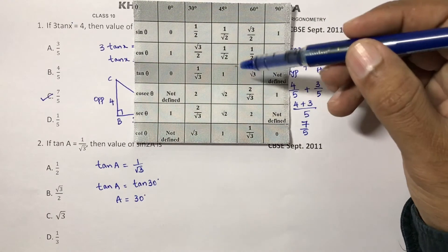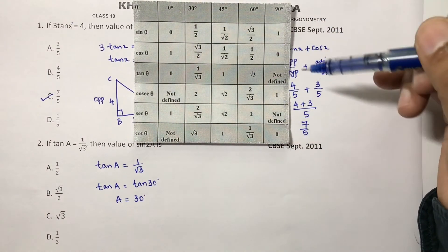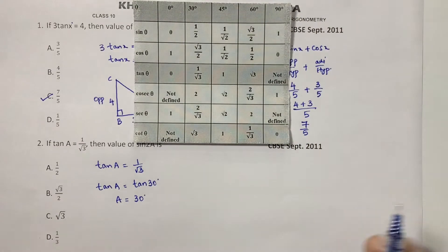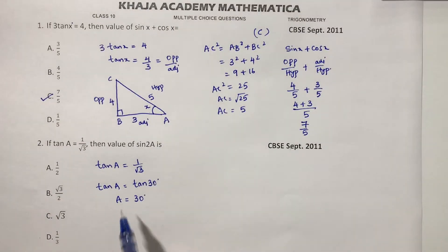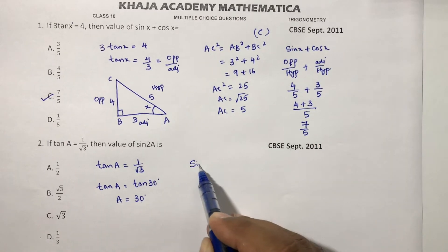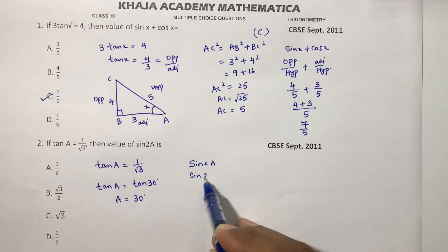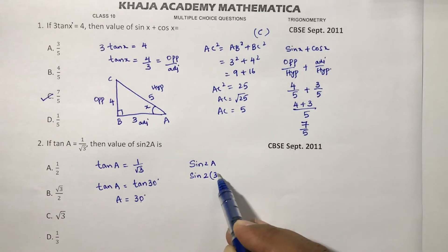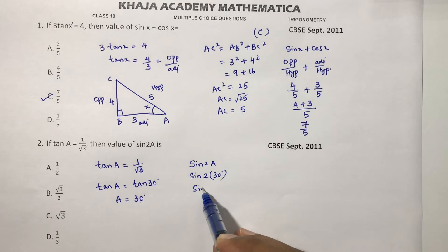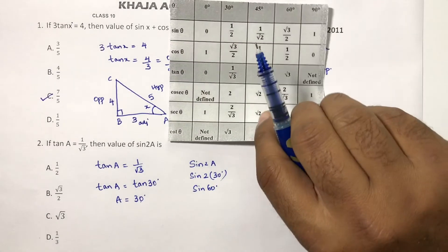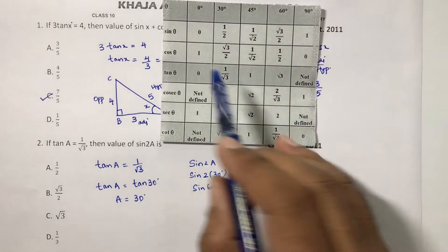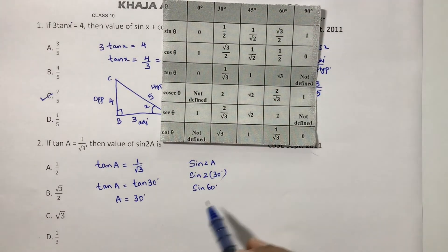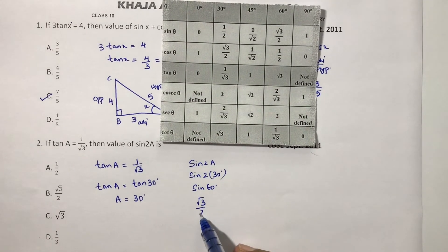There is a video based on trigonometry ratios you can check in the description. Now A equals 30 degrees. So sin 2A equals sin 2 into 30, which is sin 60 degrees. From the table, sin 60 is root 3 by 2.